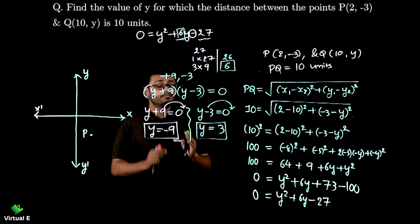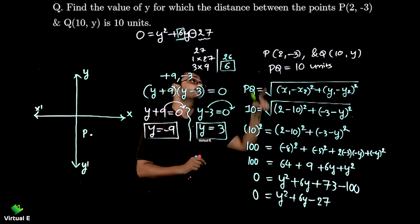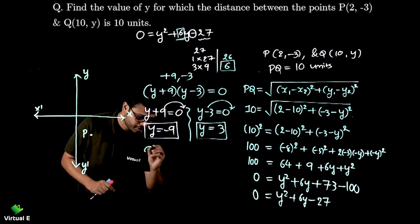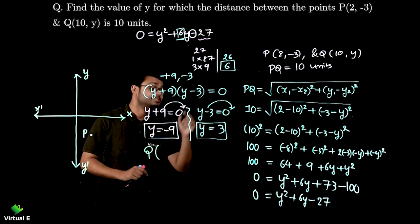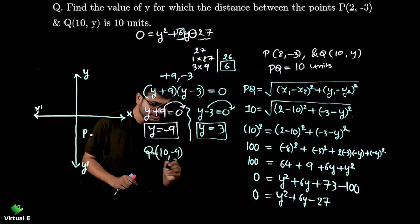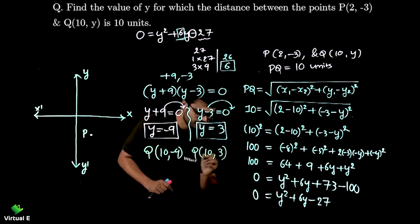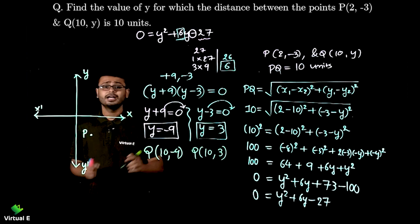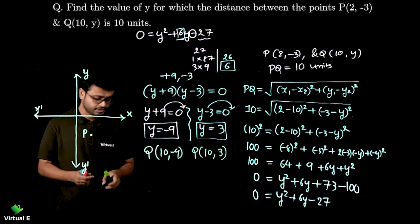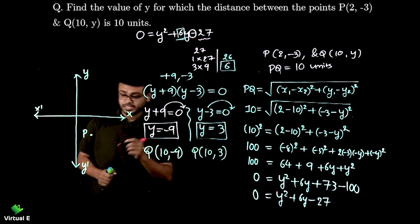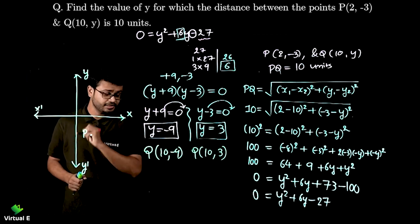Now when we put value of y into the point Q I am going to get two different points which is Q₁ is (10, -9) in this case and here Q (10, 3). Done. Let's locate this point first of all. So let's start with this one (10, -9).